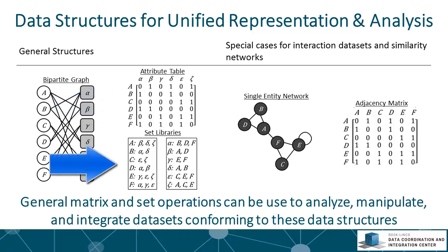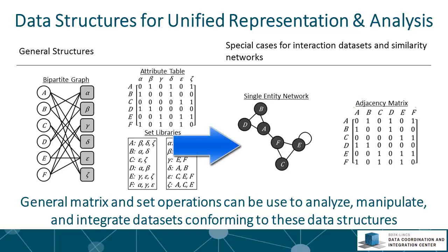The representation of gene set libraries is basically a transformation of the same data, where the label of each library is the common function for the genes and the genes are members of each set. For example, the label could be a pathway and the genes in that pathway comprise the set. This can also be transposed so that genes become the labels and terms become the set members. From this data we can also construct a network where nodes are genes connected based on their common shared attributes, called functional association networks.